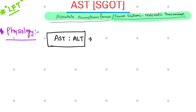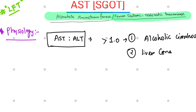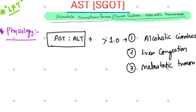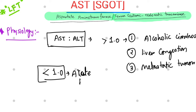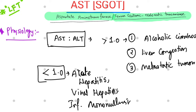Serum AST levels are often compared with ALT, which is another liver enzyme. The AST to ALT ratio, if greater than 1.0, may be due to three conditions: alcoholic cirrhosis, liver congestion, or metastatic tumour of the liver. If the ratio is less than 1.0, it might be due to acute hepatitis, viral hepatitis, or infectious mononucleosis. This ratio is less accurate if the AST level is more than 20 times the normal value.